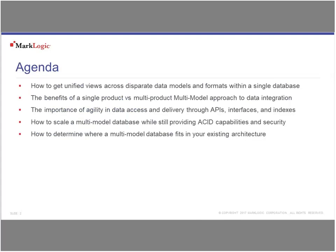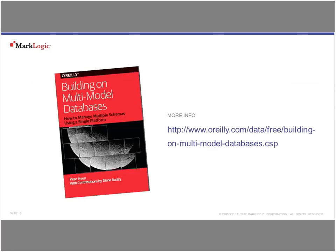Looking at the agenda, we're going to take a broad view today — we're not going to drill down too deep into any one technology. This is going to be more of a general overview looking at how to get disparate data into a single database. This is based on a book by Pete Aven called Building on Multi-Model Databases, and it's free from O'Reilly — you can also get it from the MarkLogic site.